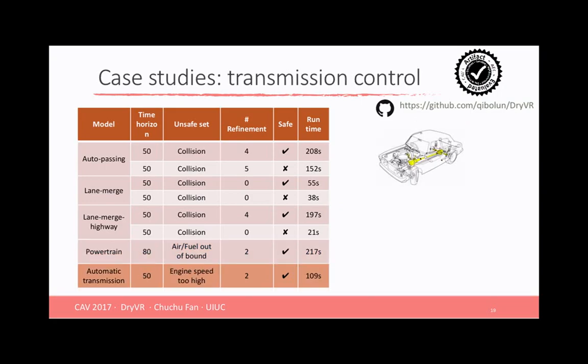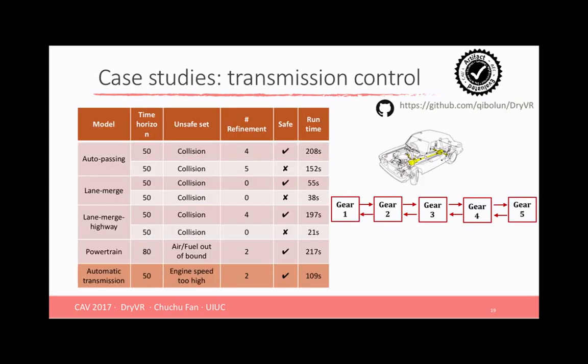The third example is a transmission system. It has five different modes from gear one to gear five, and the switch between those modes is going to be controlled by your automatic transmission controller. And this one is actually from a Simulink demo. For all these case studies, we verify the safety of them for different transition graphs and from different initial sets. We can see the running time is typically within minutes. Actually, most of the time were used to generate the sample trajectories.